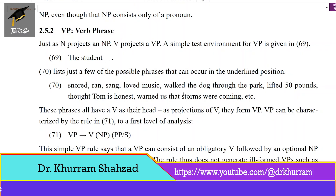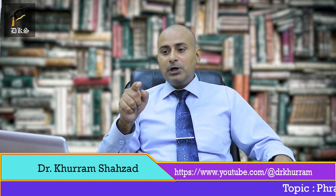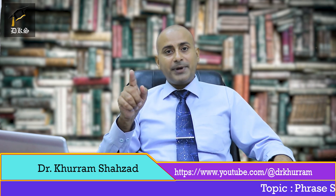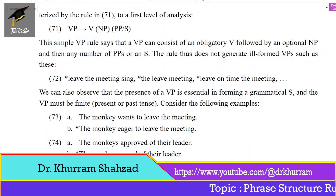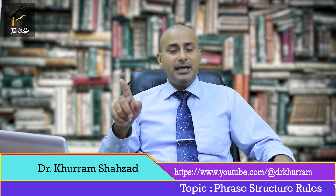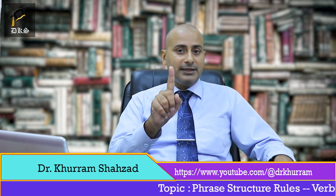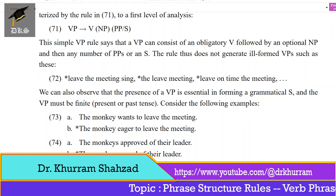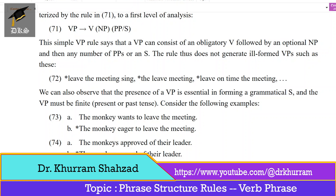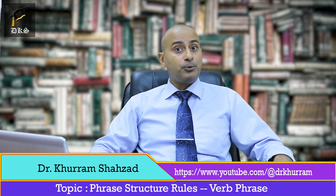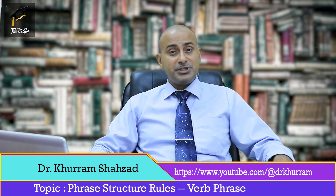These phrases have a V as their head. As projections of V, they form VP. VP can be characterized by the rule in 71 to a first level of analysis. In 71, we have VP which is equal to V, and then in brackets we have NP — meaning it is optional — and then PP and modifying sentence. This simple VP rule says that a VP can consist of an obligatory V followed by an optional NP, which is a noun phrase, and then any number of PP prepositional phrases or an S which is a modifying sentence.